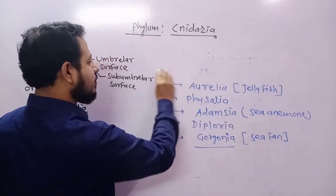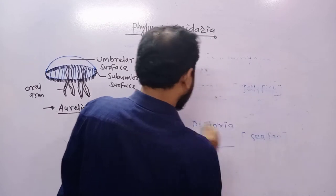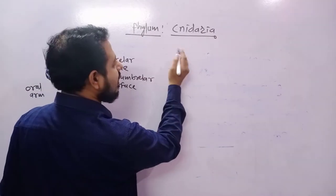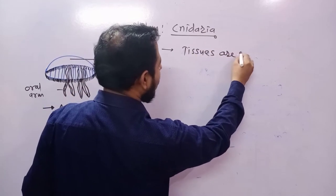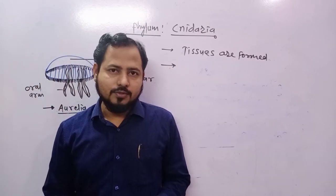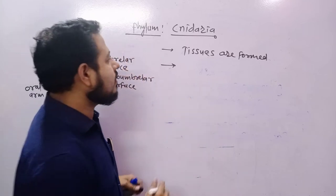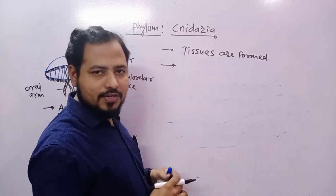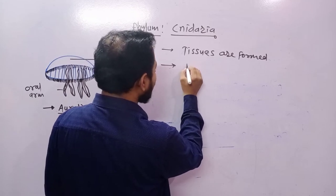An important feature of this phylum is tissue grade body organization. Different cells are aggregated to form tissues. In Porifera, only cells are present — no tissues, no organs — but in Cnidaria, organs are missing but tissues are present, formed from different cell aggregations. So some division of labor is visible here.